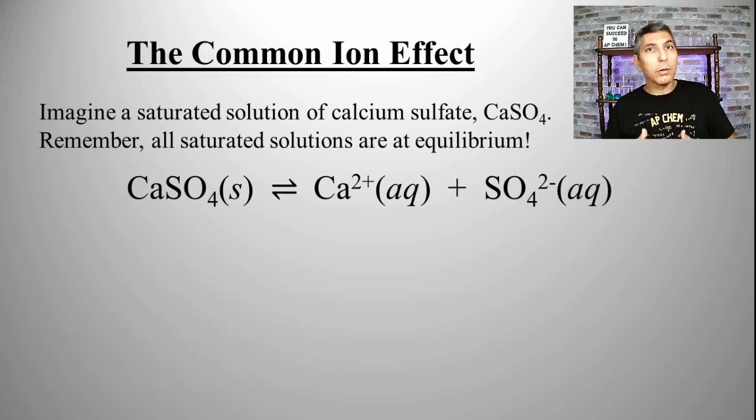In the last video, we learned about KSP and how we can calculate the solubility of a substance. We were focusing on how much of a substance, specifically an ionic compound, could dissolve in water, in distilled water. Notice that sometimes we don't have distilled water or pure distilled water as our solvent.